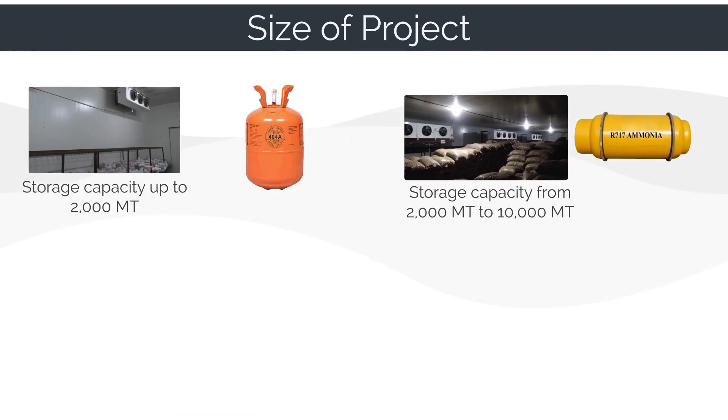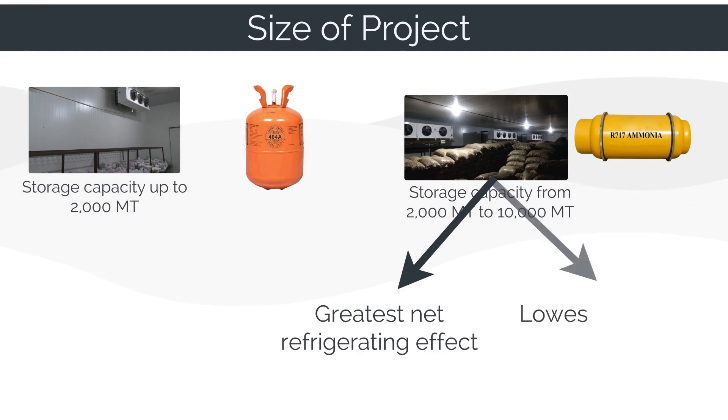For large cold storage facilities, ammonia has become the refrigerant of choice because it produces the greatest net refrigerating effect and often the lowest BHP per ton of any industrial refrigerant.